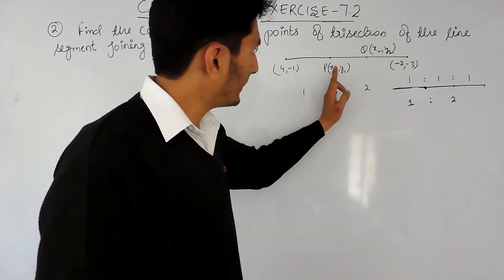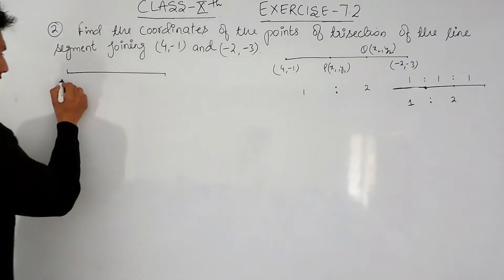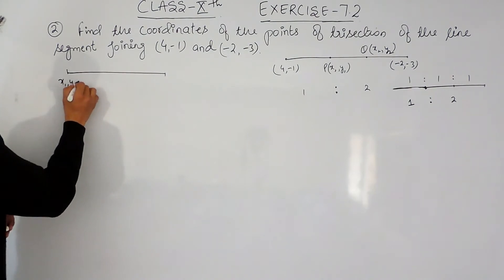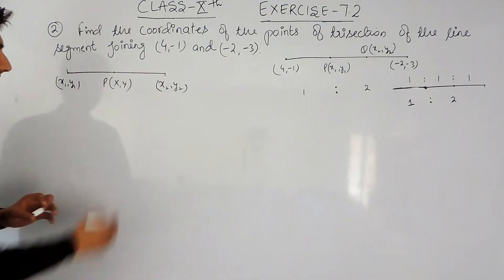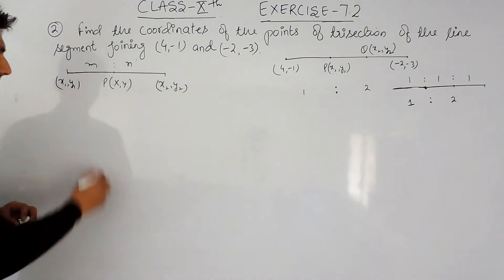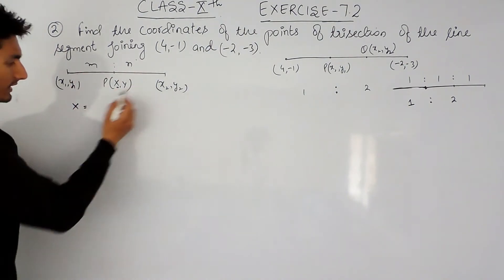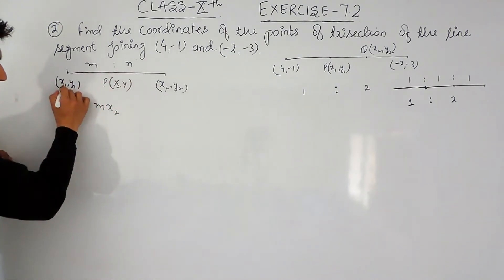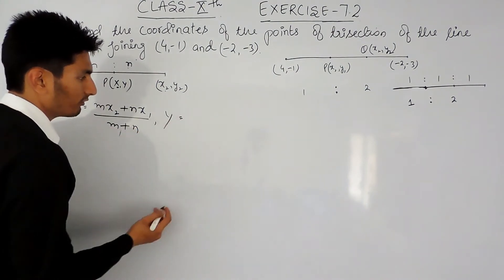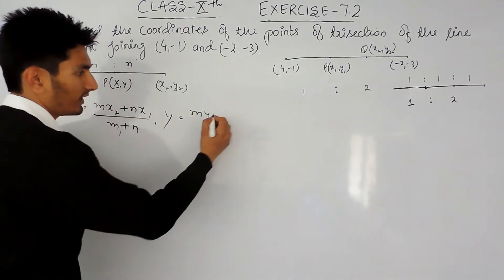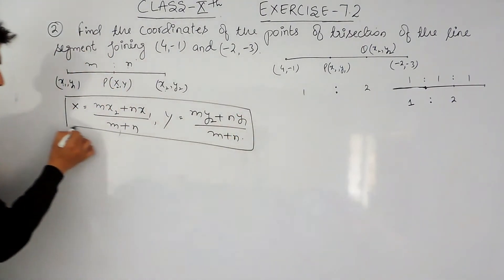Now to find the coordinate for point P, I have to use the section formula. If these two endpoints are (x1, y1) and (x2, y2), and a point P divides this line in ratio m:n, then the x-coordinate of P is (m·x2 + n·x1) / (m + n), and similarly the y-coordinate is (m·y2 + n·y1) / (m + n). This is our section formula and you have to learn this to apply it in any question.